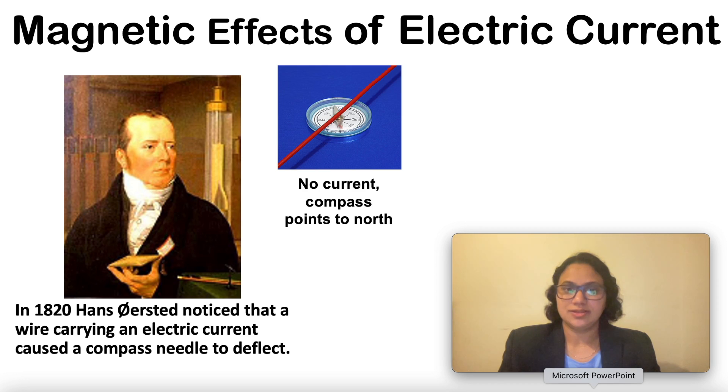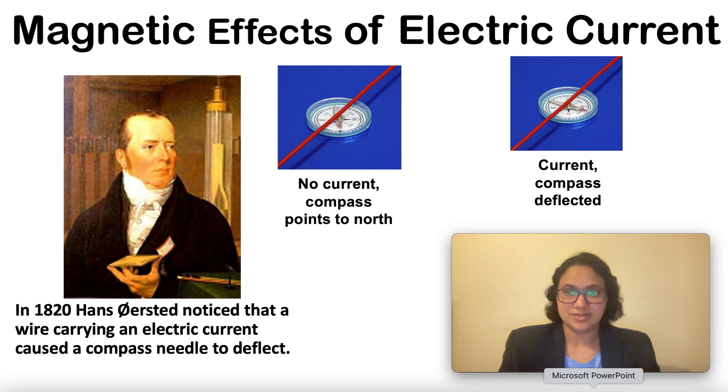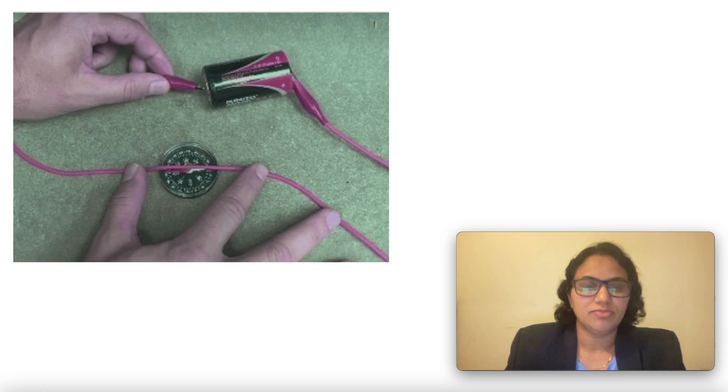That means when no current passes, the compass points to Earth's magnetic field. But when the current passes, the compass needle deflected. What happens here?